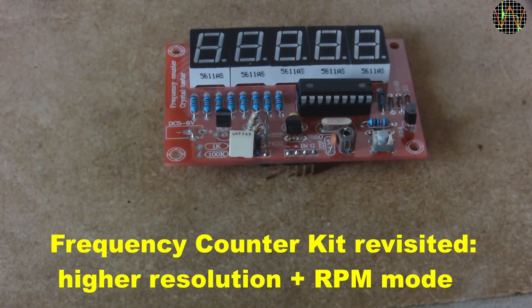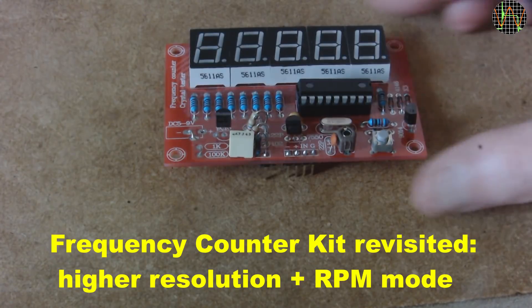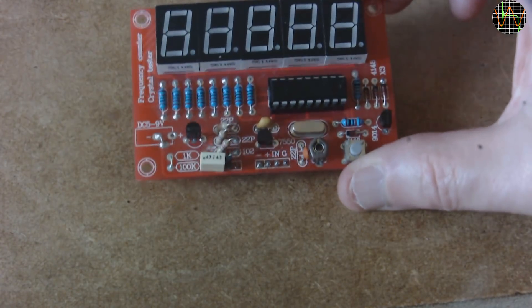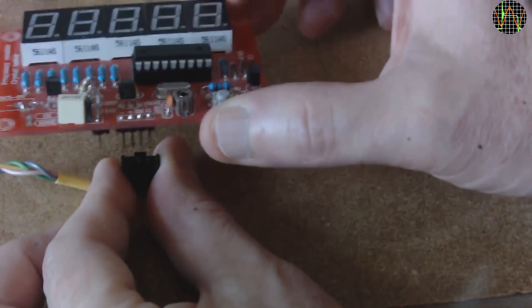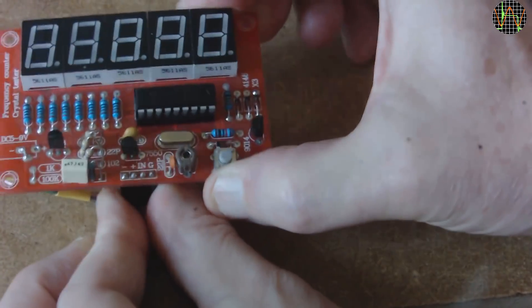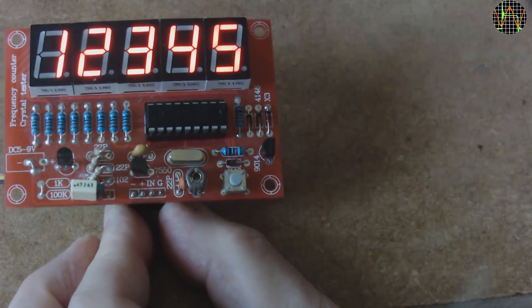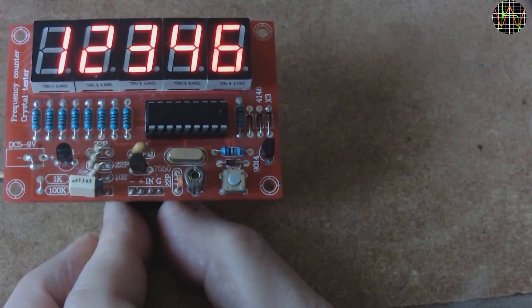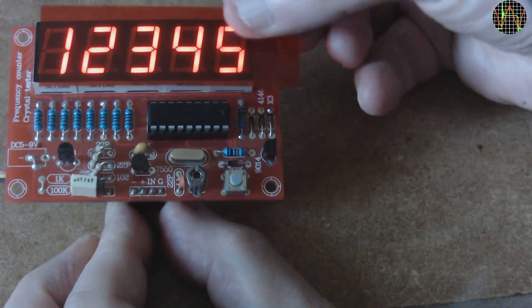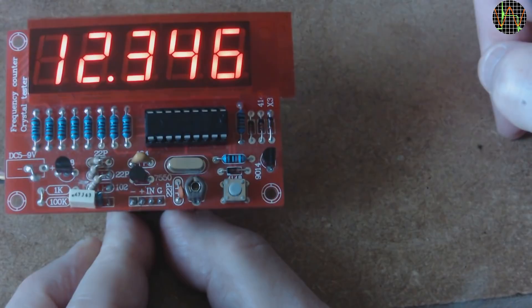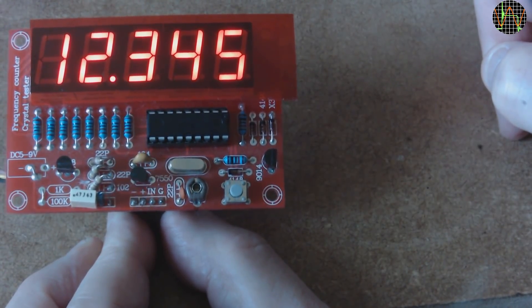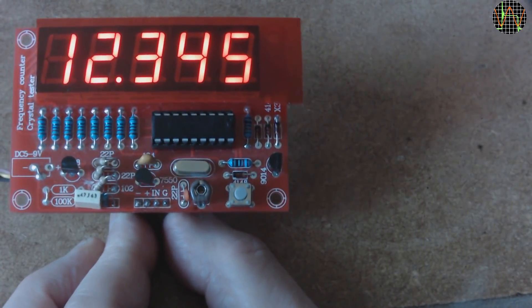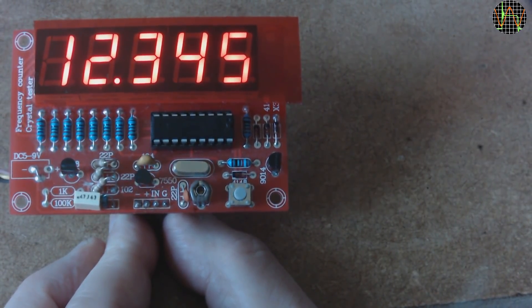Hi there, almost exactly a year ago I made two videos about a popular frequency counter kit you can get very cheap from China. The counter's main component is a PIC16F628A microcontroller and in the second video I described a firmware modification that improved the resolution below 100kHz. The assembler source code and hex file are on my Github page. I put links to my Github repository and the earlier videos in the description below.